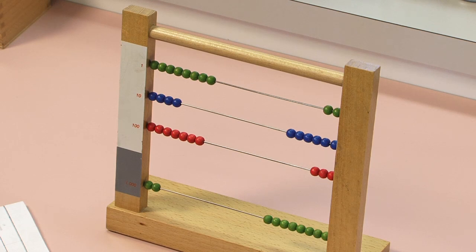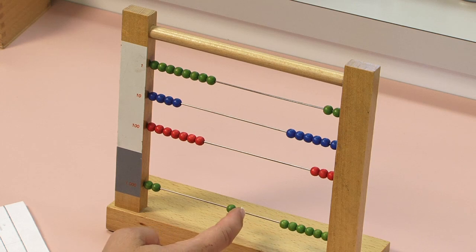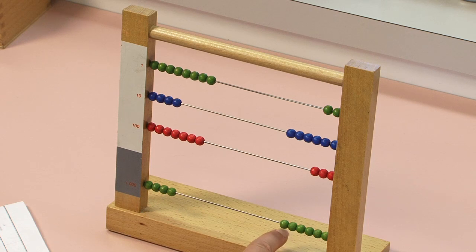In the thousands, I'm taking away two. One, two. I will take away these two. Let's see what's left. One, two, three, four, five, six. Six thousands are left. Six is the answer you will write in the thousands place.